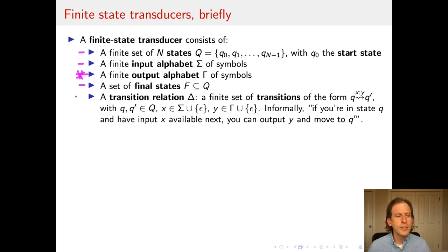And this also necessitates a difference in the transition relation from finite state automata. Whereas finite state automata had transition relations which had a from state, a to state, and an input symbol that was consumed, a transition relation in a finite state transducer has all those things, but in addition to the input symbol, it also has an output symbol.